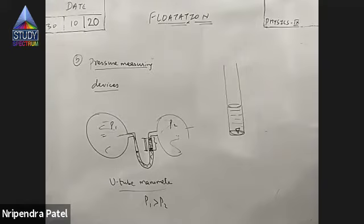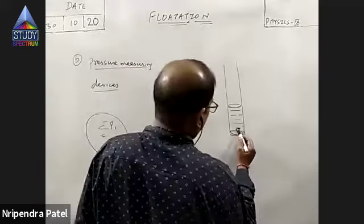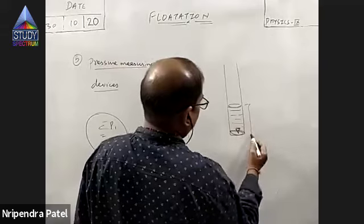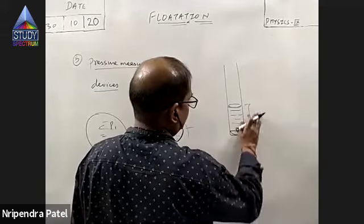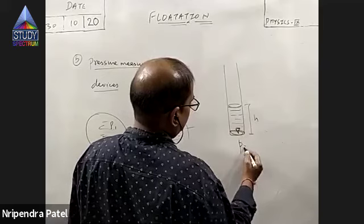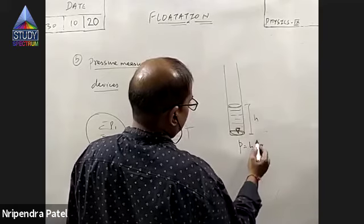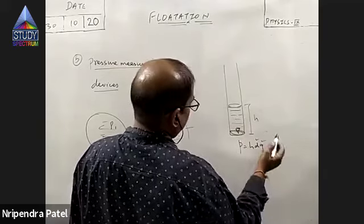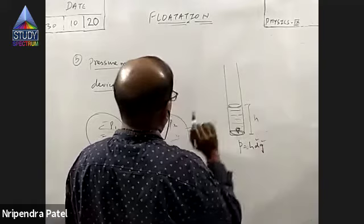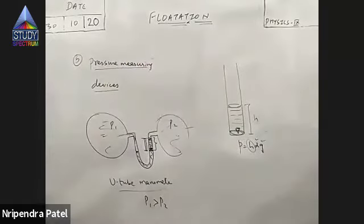One should answer this question — this is easy. If the depth of the point from the free surface is H, then pressure at this point is given by H·D·G. D is density of the liquid — it remains constant. G is gravity — it remains constant. H is increasing, so the pressure will also increase.